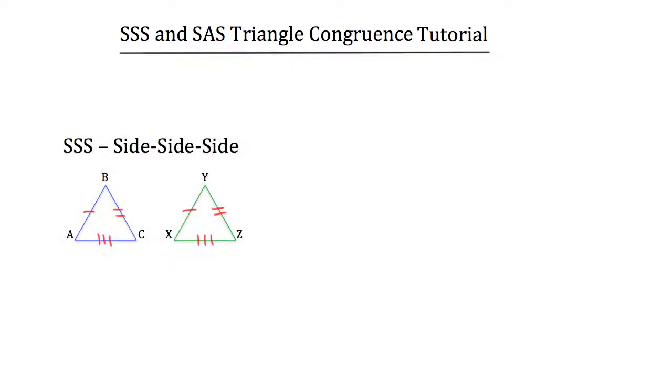What it means is that if you have three sides of one triangle congruent to three sides of another triangle, then those two triangles are congruent. In this example, we could say that triangle ABC is congruent to triangle XYZ because of this postulate. You can see that segment AB is congruent to segment XY, segment BC is congruent to segment YZ, and segment AC is congruent to segment XZ.